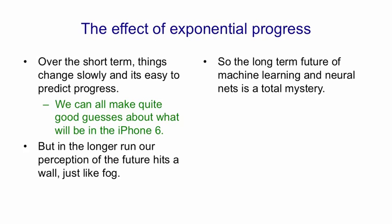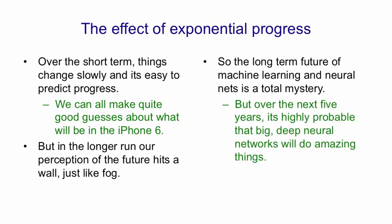In the short run, however, in a period of, say, 3 to 10 years, we can predict it fairly well. And it seems obvious to me that over the next five years or so, big deep neural networks are going to do amazing things.